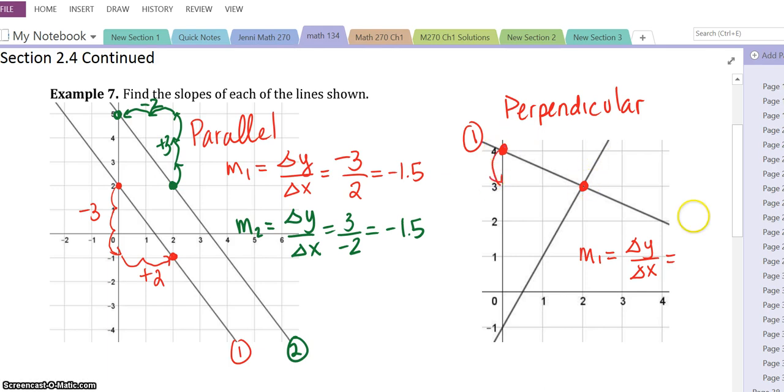If I start at, I'll start at this point. Go down, go down 1. And what do we write? Run. Our change of x is 2. So it looks like it's negative 1 half.